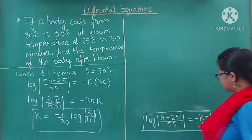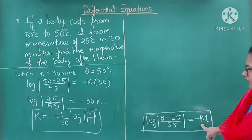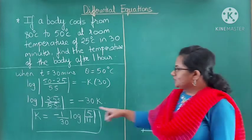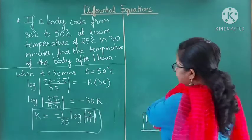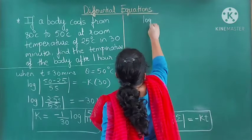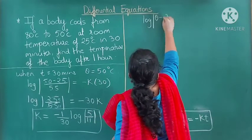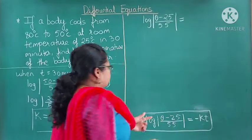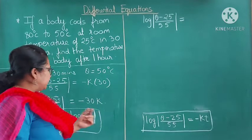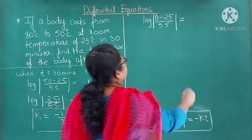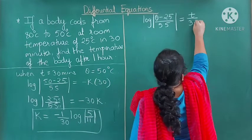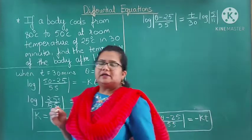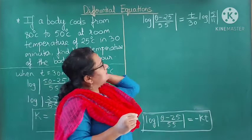We substitute this value of k into the expression. Since k = −(1/30)·log(5/11) and there is already a negative sign, the two negatives give a positive. So log((θ − 25)/55) = (t/30)·log(5/11). This is our working expression.